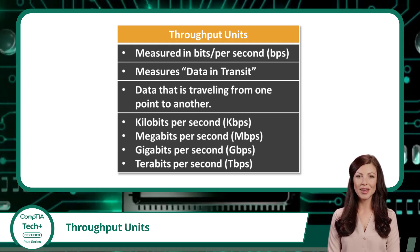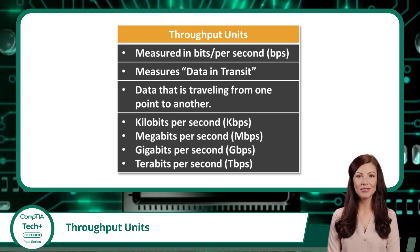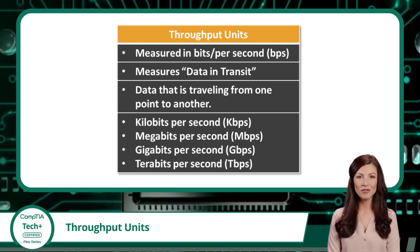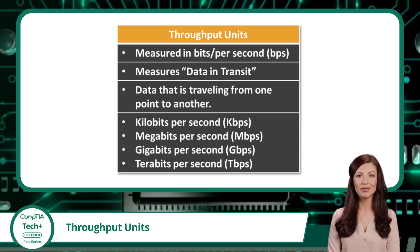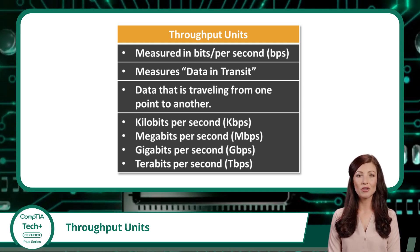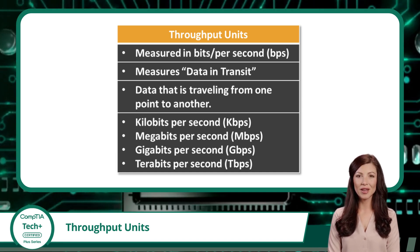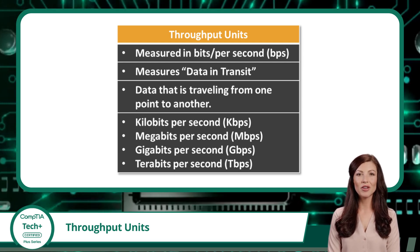Then there are gigabits per second, which are quantities measured in billions of bits per second. This is a common throughput rate for modern internet connections in urban areas. Gigabit connections are more than sufficient for most residential demands and many corporate environments. Up next is terabits per second, which are quantities measured in trillions of bits per second. Throughput rates in this range are relatively new and not very common.